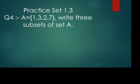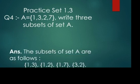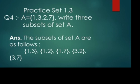I've taken {1, 3} as one set, so {1, 3} is a subset of A. Then {1, 2} as one set, and {1, 7} by taking those elements. Also {3, 2} and {3, 7}. So any 3 subsets you can write.